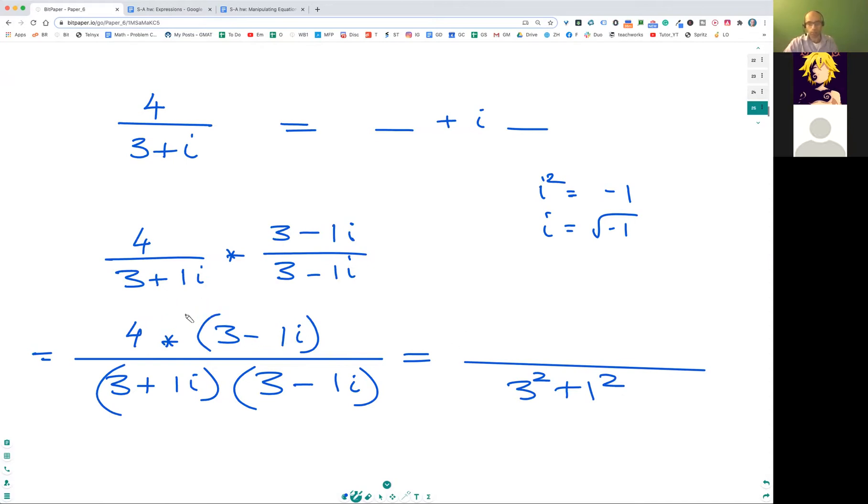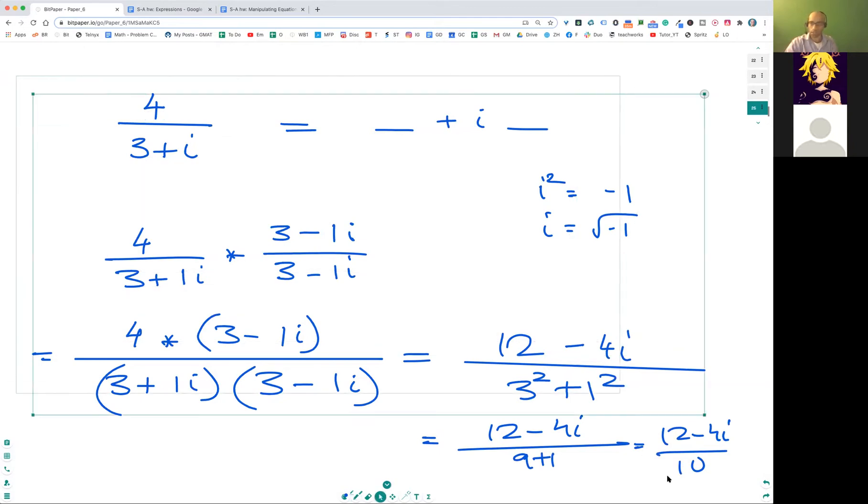And the top is just you simply got to distribute it. So let's distribute this: 4 times 3 is 12, and 4 times minus 1i is minus 4i. So that folks is the answer: (12 minus 4i) over (9 plus 1), which is 10. (12 minus 4i)/10.